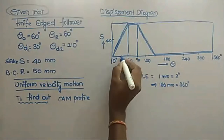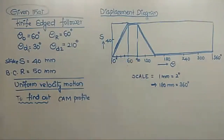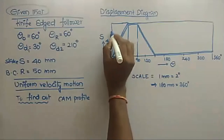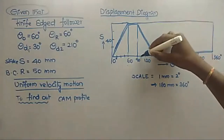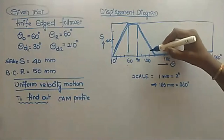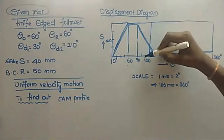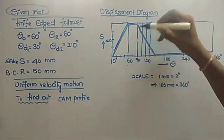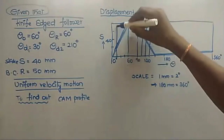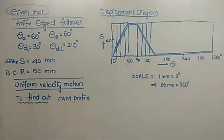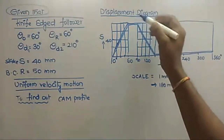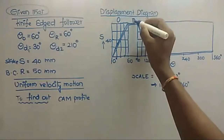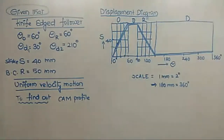Now divide the outstroke on the displacement diagram into 4 equal parts, and similarly divide the stroke length into 4 equal parts. Divide the return stroke into 4 equal parts as well. Then draw vertical lines through these horizontal divisions to get reference points on the displacement diagram.